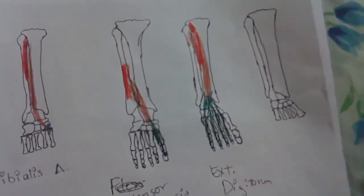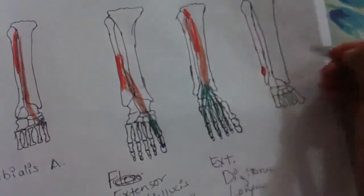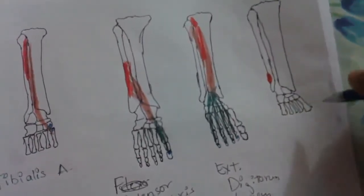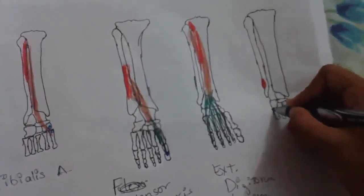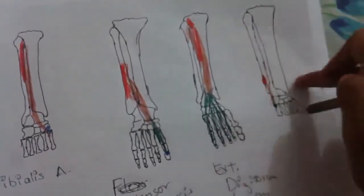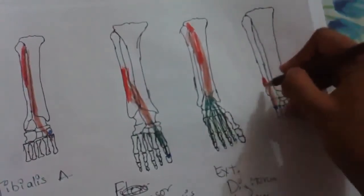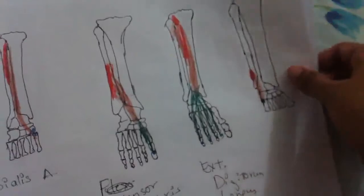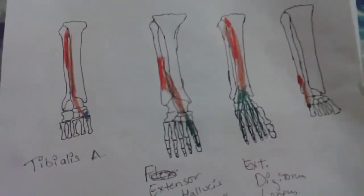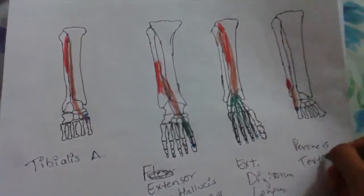The fourth muscle is peroneus tertius. It takes its origin from the lower one-fourth of the medial surface of the fibula and is inserted into the fifth metatarsal bone. It is the smallest muscle of this compartment, which is why it is not visible in the upper cross-section. It is supplied by the anterior tibial nerve and helps in dorsiflexion of the ankle.